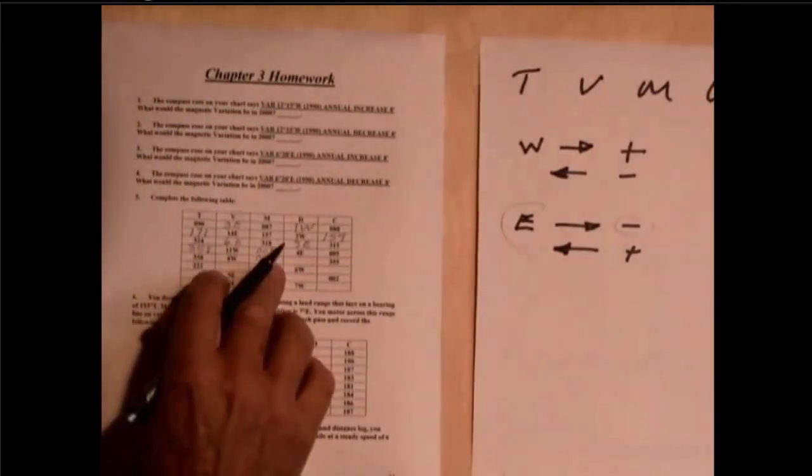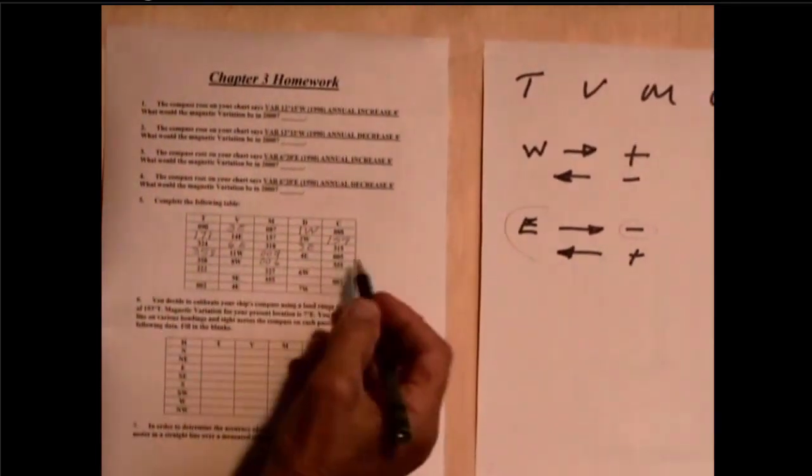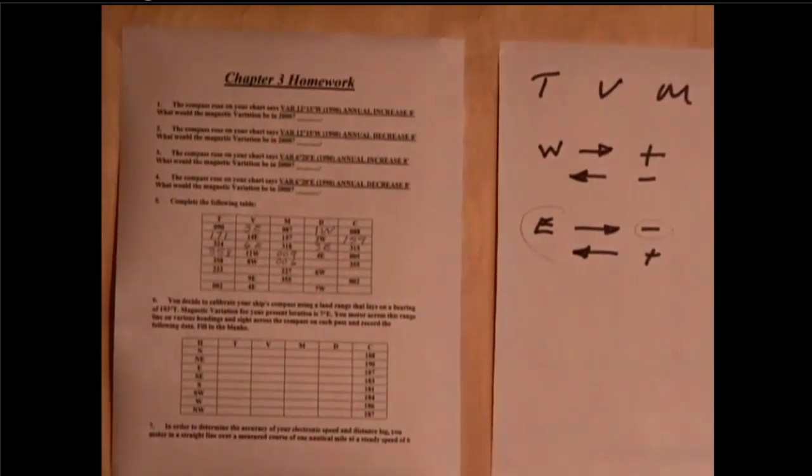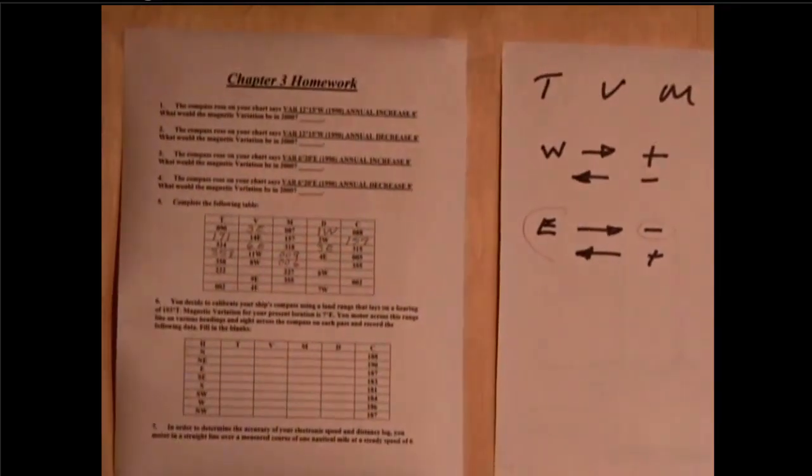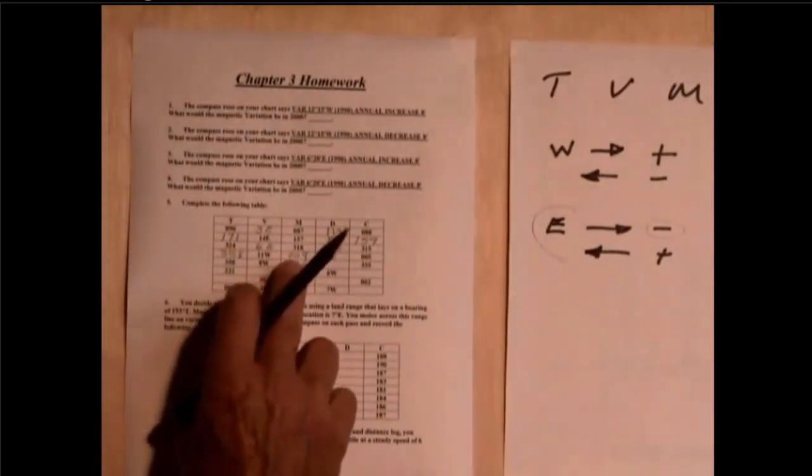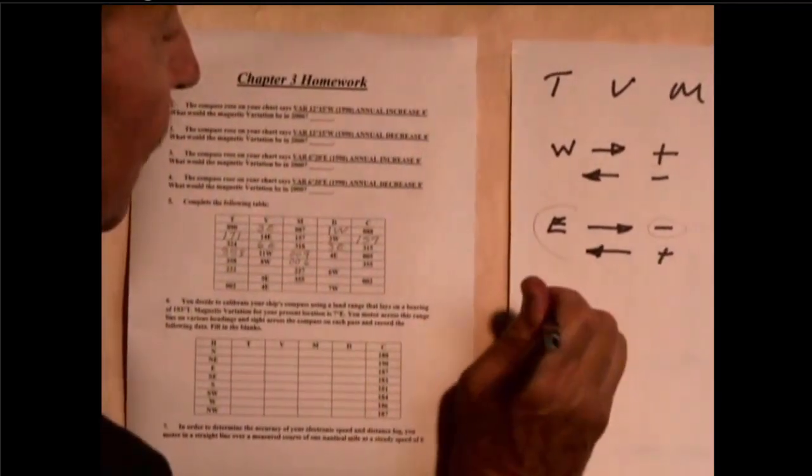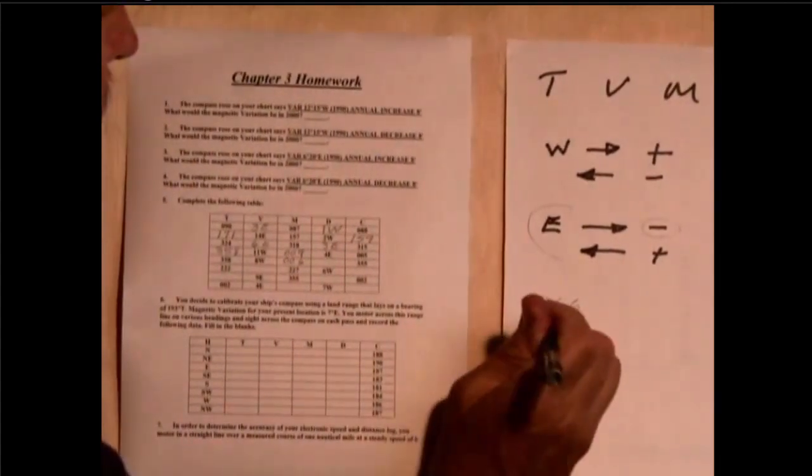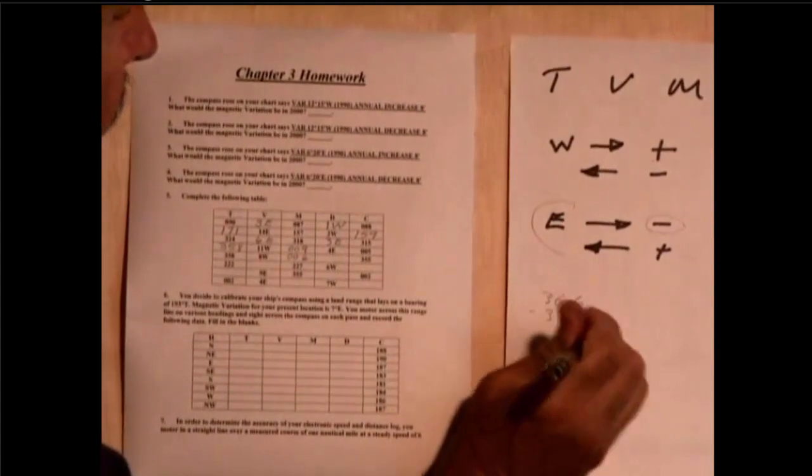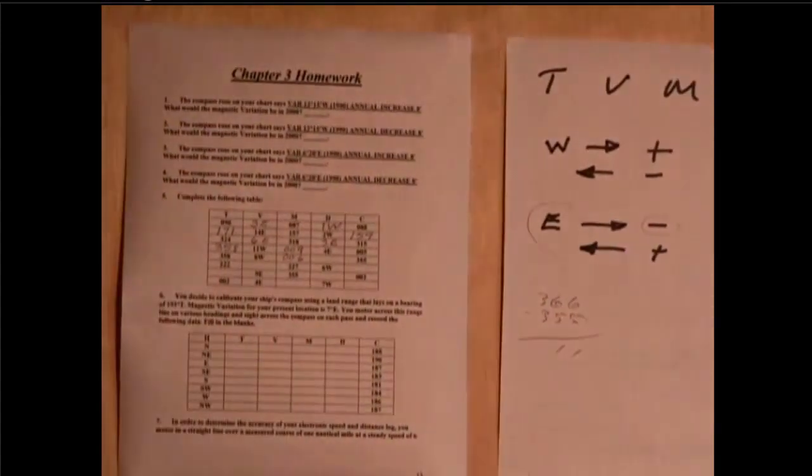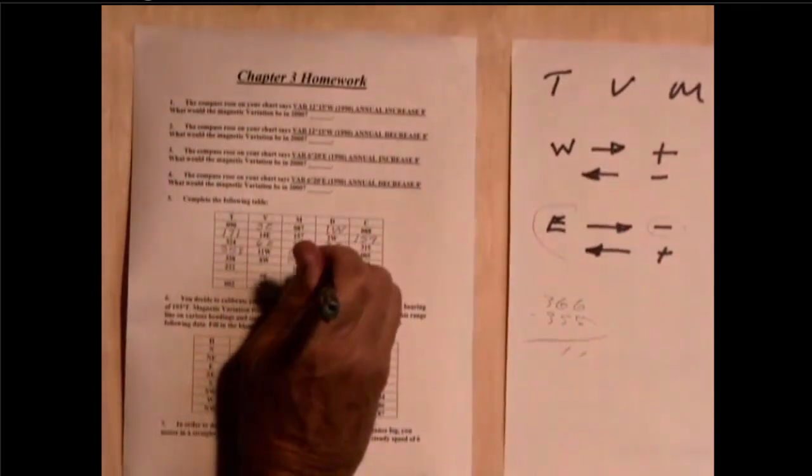And if this is 006 and if compass is 355, then this would have to be a subtraction. Because remember, this would be 366. If I write 366 for that and I take 355, that's going to be 11. It's going to be a subtraction of 11 or 11 east.